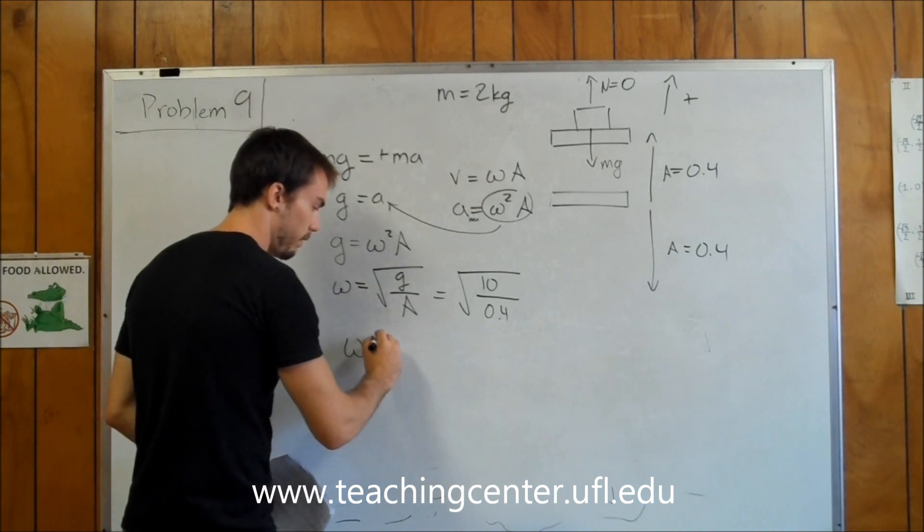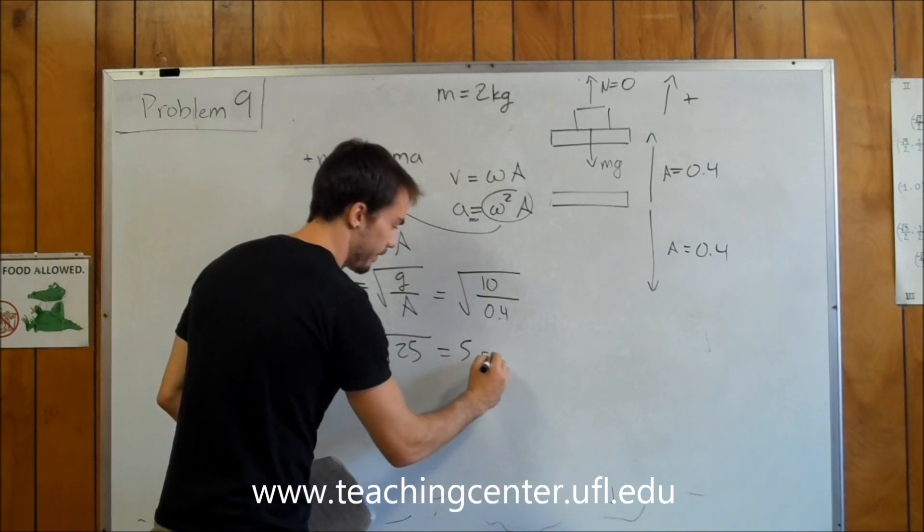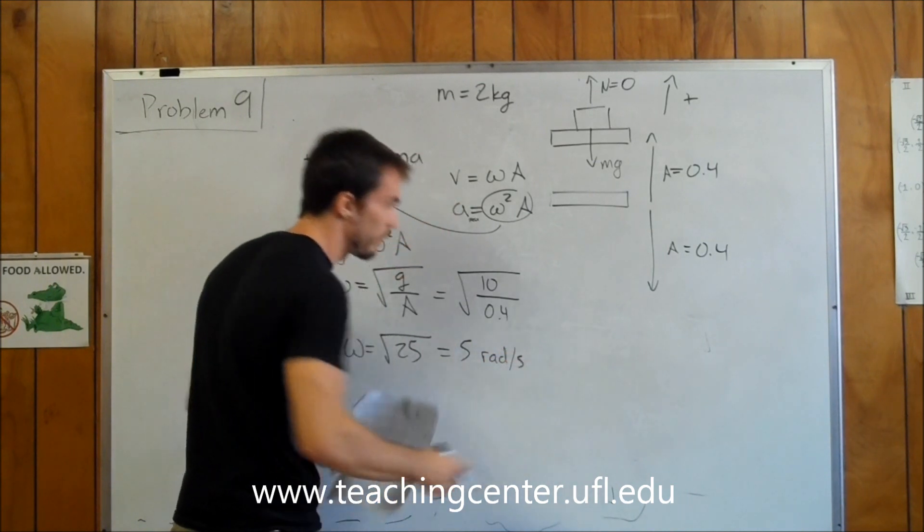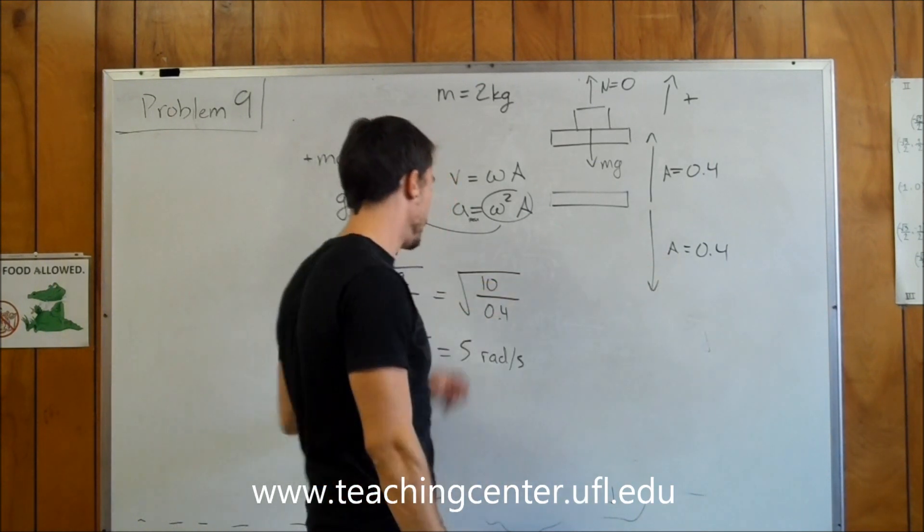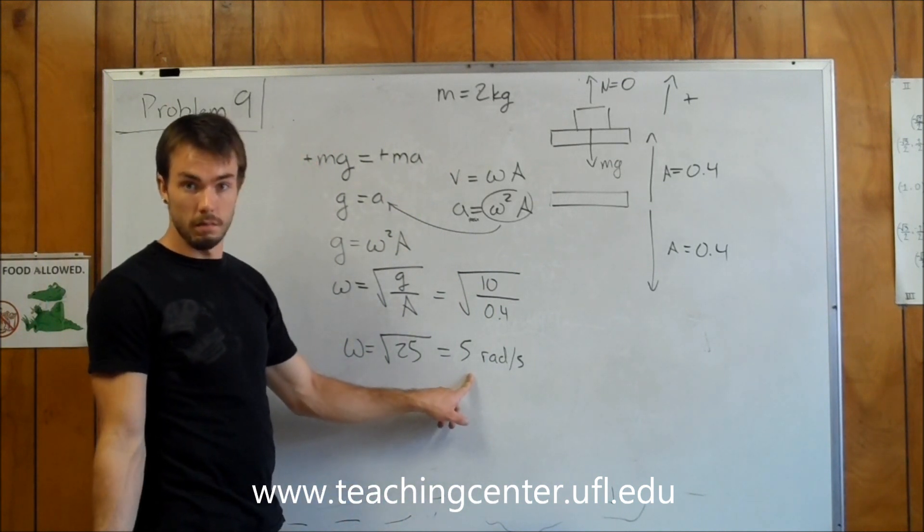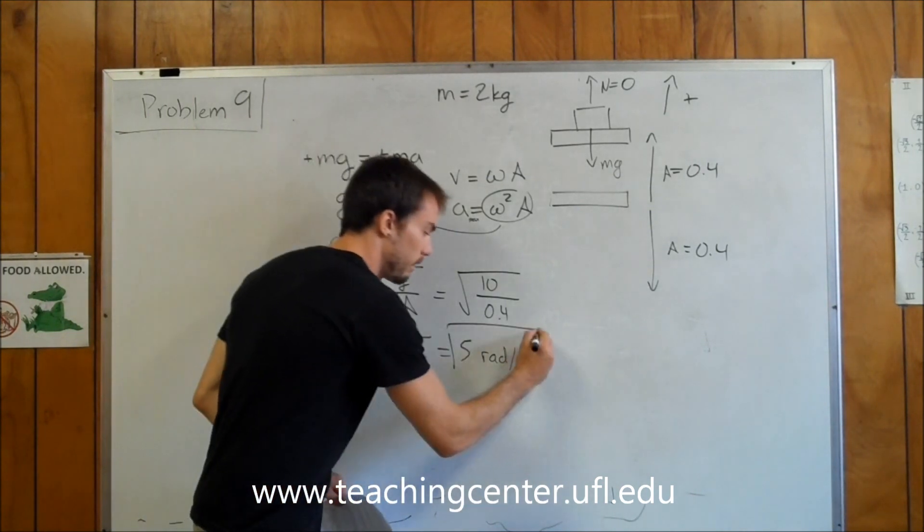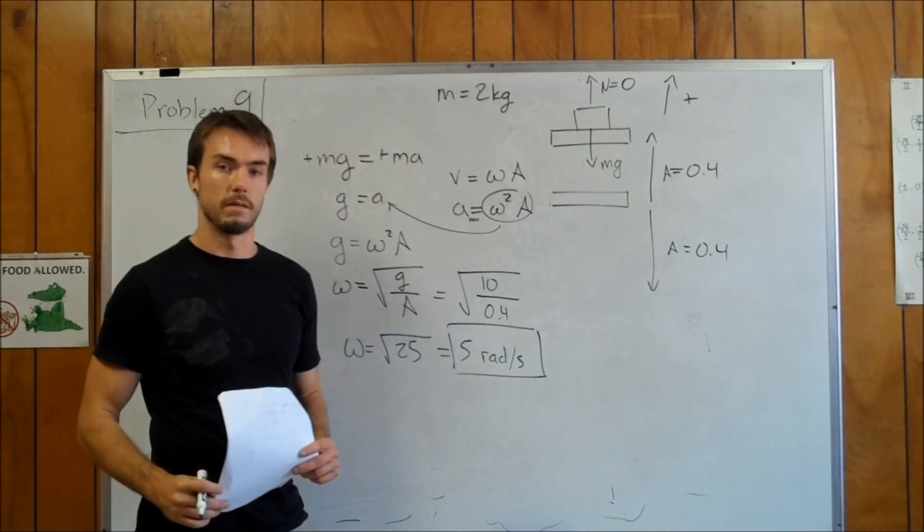So omega is just going to be equal to the square root of 25, which is going to be 5 radians per second. And since we use our amplitude in meters and we use gravity in meters per second squared, we end up getting our answer omega in the correct units of radians per second, which is choice 1 and your correct answer to this problem.